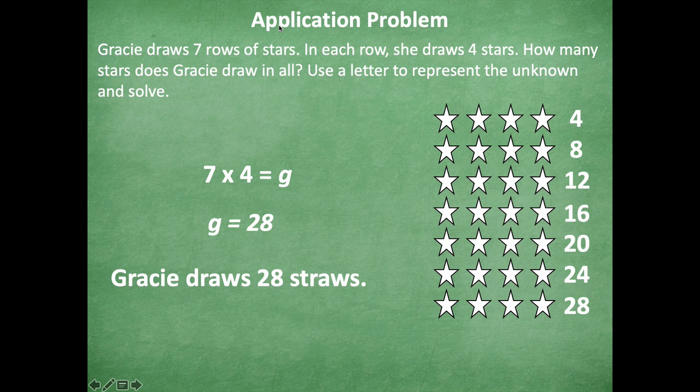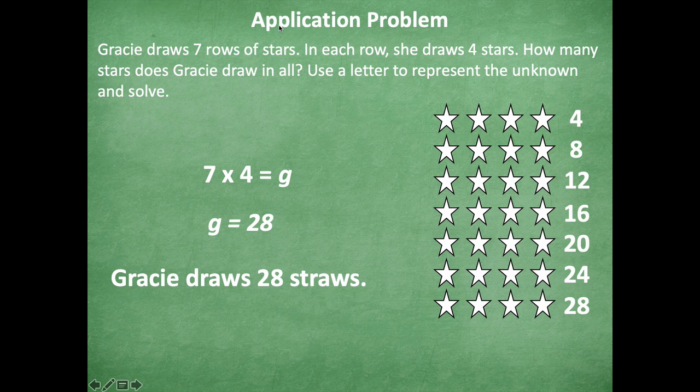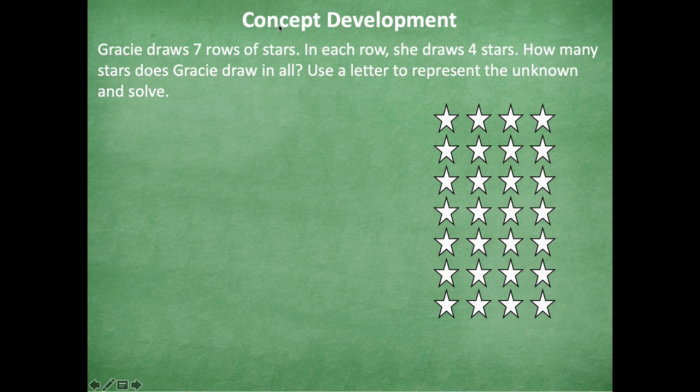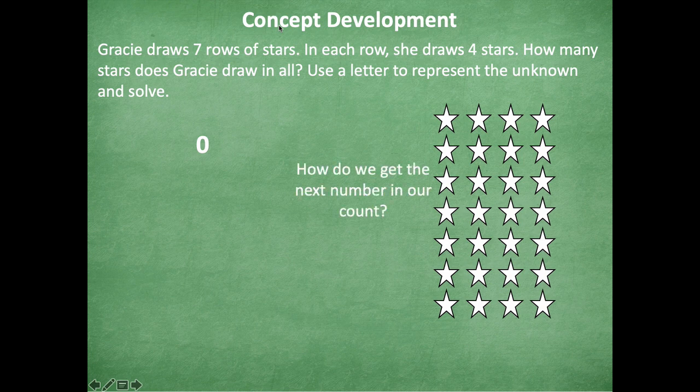Okay friends, so we can also skip count by sevens four times, so that would be 7, 14, 21, 28. Let's say you're not as fluent with your skip counting by sevens, let's talk about how we can use another strategy to help us. So we can use those number bonds as we're going through. So if we start with zero, how do we get to the next number in our count?